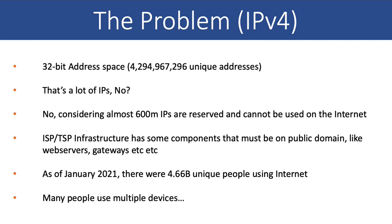But there are 4.3 billion unique addresses — how can they get exhausted? Consider this: almost 600 million IPs are either reserved or cannot be used. These are private address spaces, multicast reserved spaces, and loopback addresses that cannot be used in everyday networking. Some of them can be used for internal networking, but they cannot be used as a public IP address. Then there are our ISPs and TSPs who need to use public IP addresses for some of their infrastructure, like servers and routers which are our gateways. So not all IPs are only for clients.